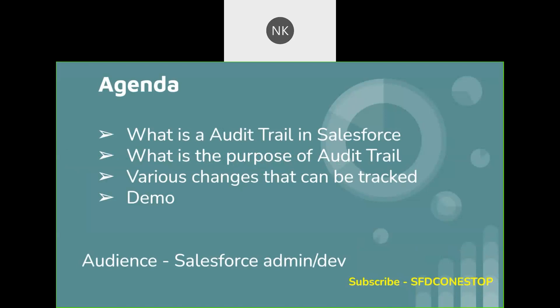Now let us understand what is an audit trail. The audit trail is mainly used to track recent setup changes made to our organization. It can be mainly used for debugging and troubleshooting purposes, which helps our system admin to know who has done a change, what was the change done, and at what specific time the change was done.